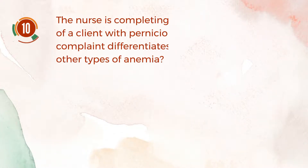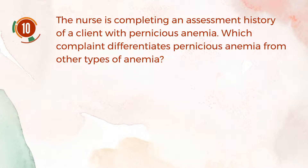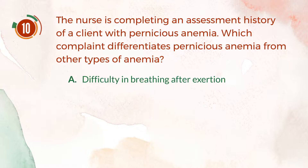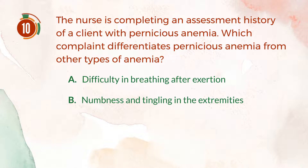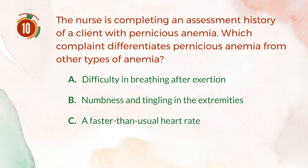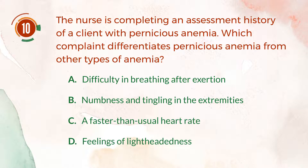Number 10. The nurse is completing an assessment history of a client with pernicious anemia. Which complaint differentiates pernicious anemia from other types of anemia? A. Difficulty in breathing after exertion. B. Numbness and tingling in the extremities. C. A faster-than-usual heart rate. D. Feelings of lightheadedness.